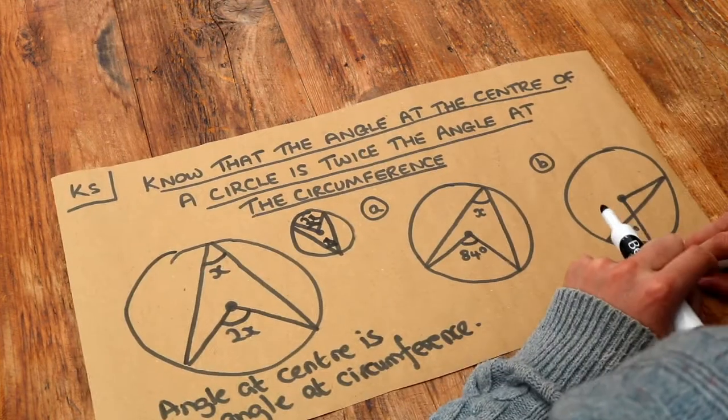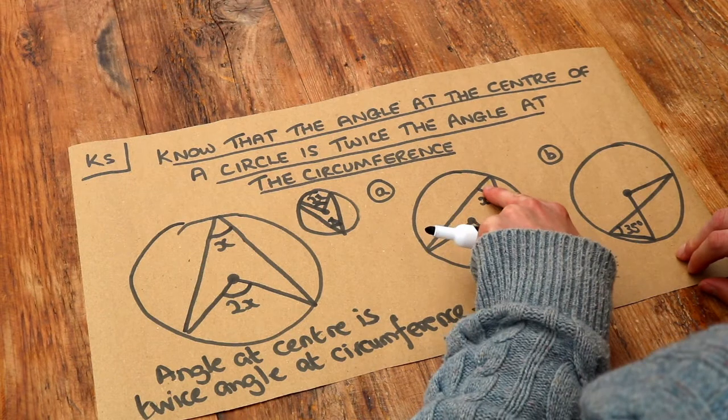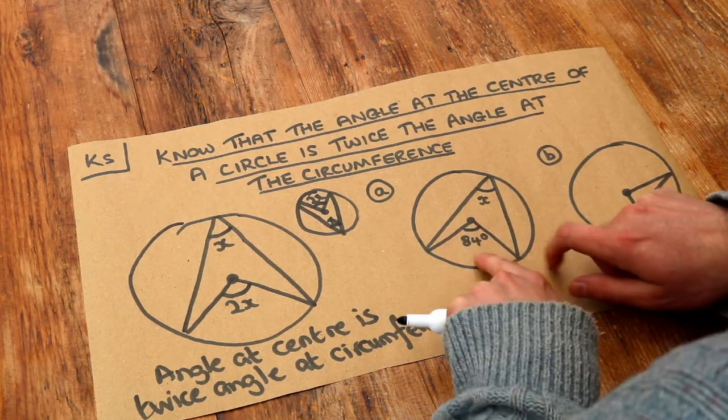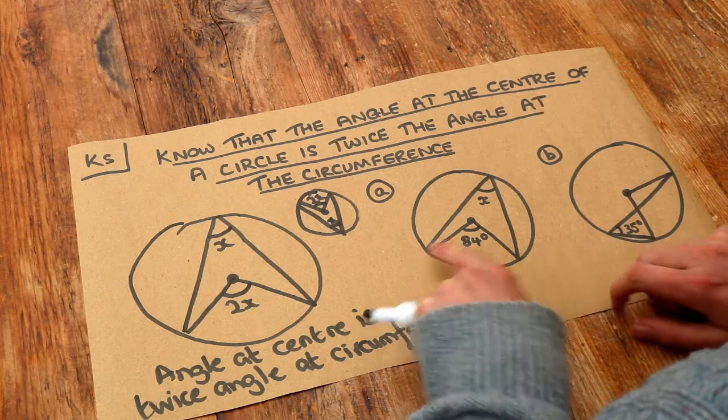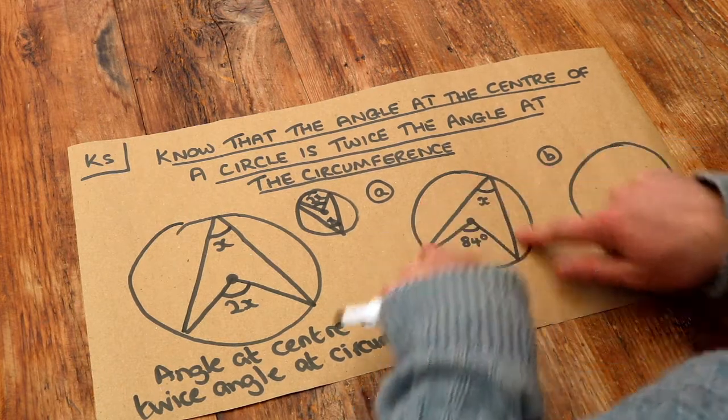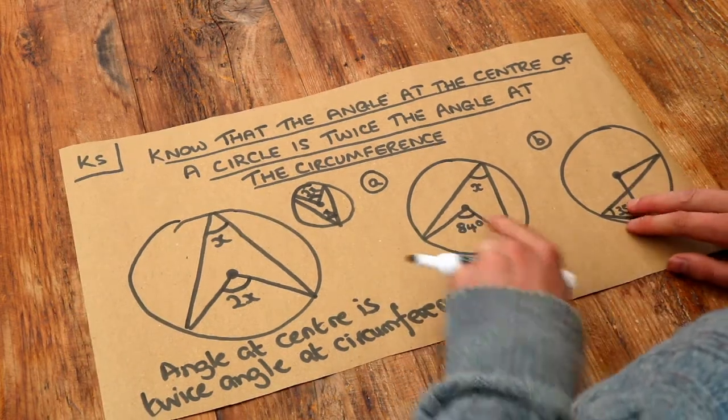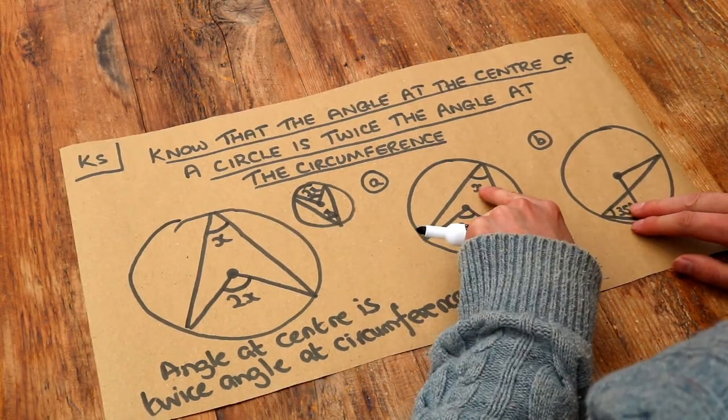Let's apply it to these examples. We've got an angle at the centre and an angle at the circumference. Note that the endpoints of the lines from that angle must be the same as the endpoints from the other angle. These two points are the same as these two points. This angle at the centre is twice the angle at the circumference.